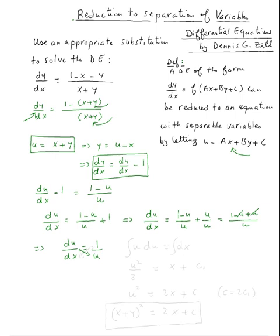Now, if I multiply cross this way, u du is equal dx. Take the integral of both sides. The left side will be u squared over two, and the right side — the integral of dx — is x plus some constant.